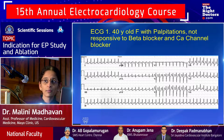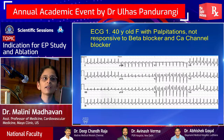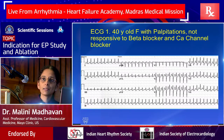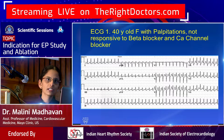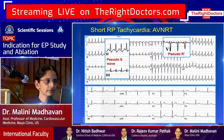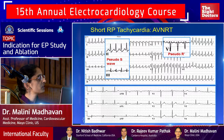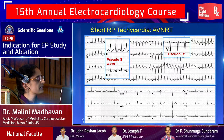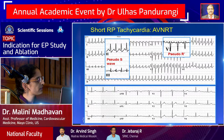AVNRT can be ablated with about 95% success rate and relatively low complication risk. Patients typically do not come back after ablation. If you find this pattern and the patient has tried beta blockers and calcium channel blockers with recurrences, think about EP study and ablation. On the blown-up view, remember the R-prime pattern in V1 and pseudo-S in leads 2 and 3, which disappear in sinus rhythm.